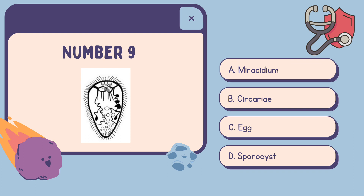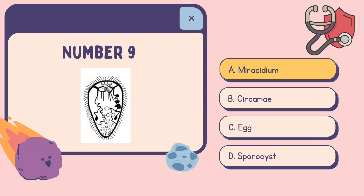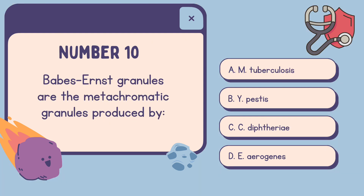Number nine: Identify the photo below. A. Miracidium. B. Cercariae. C. Egg. D. Sporocyst. The correct answer is A. Miracidium.